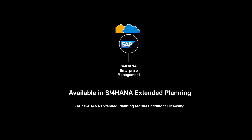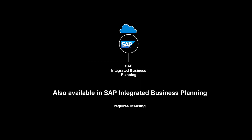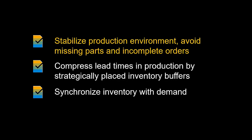Demand-driven materials requirements planning is available in S4 HANA Cloud and in S4 HANA on-premise. DDMRP is licensed separately. DDMRP functionality is also available in SAP Integrated Business Planning. Let us conclude by reviewing the benefits of DDMRP. The first benefit is the ability to stabilize the production environment — by utilizing the buffers at the decoupling points, production will be helped by avoiding key missing parts, resulting in less incomplete production orders. Secondly, the strategic decoupling in production through the use of buffers means that the lead times in production will be compressed, making execution and planning less error-prone. Thirdly, as the buffers are responsive to the demand, they will also synchronize the inventory with demand.